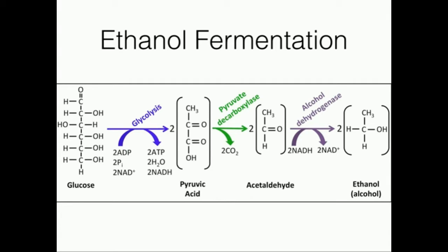Pyruvate under anaerobic conditions can react with an enzyme shown in green called pyruvate decarboxylase. This enzyme removes the carboxyl group and you generate a molecule called acetaldehyde. Acetaldehyde can then react with alcohol dehydrogenase. The acetaldehyde reacts with NADH, and not only do you get ethanol as a byproduct, but you end up regenerating your NAD. So in ethanol fermentation, alcohol dehydrogenase is specifically the enzyme that regenerates the NAD, which can then come back to glycolysis and recontinue it.